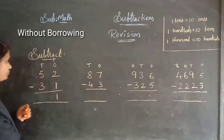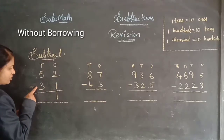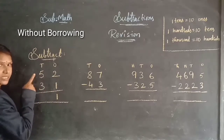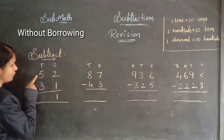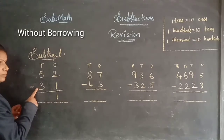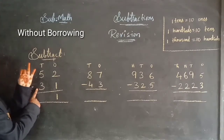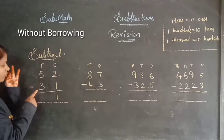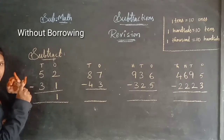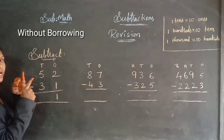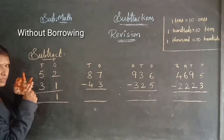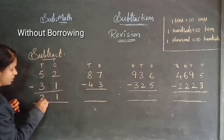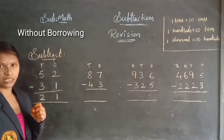Now, coming to tens. I am starting from three and I want to reach the five. Three after: four, five. To reach the five, I require two more numbers. So, two I am writing here. The answer will be twenty-one.